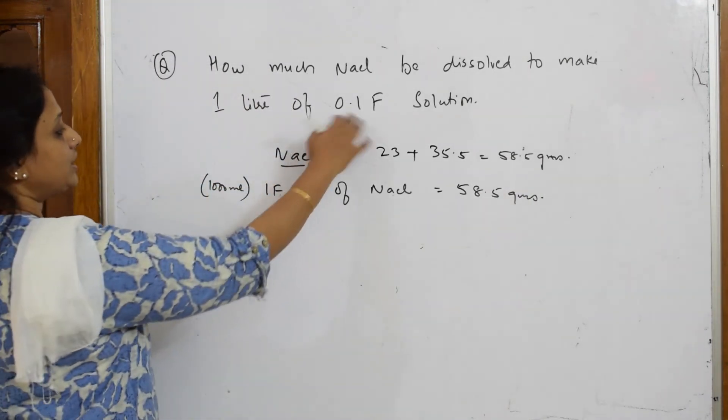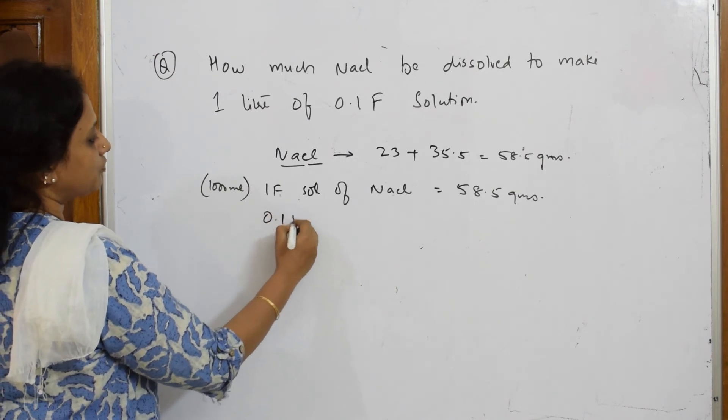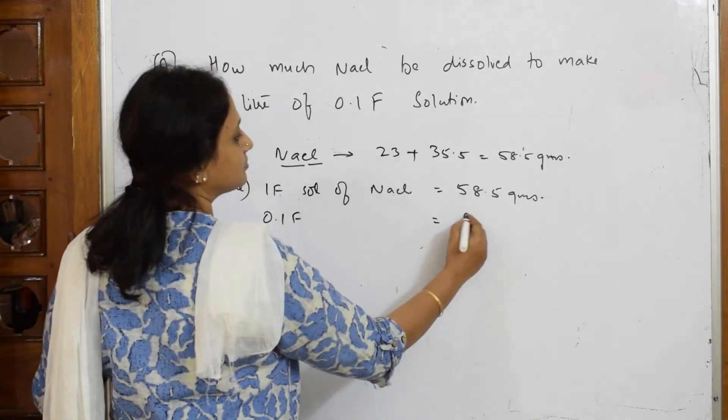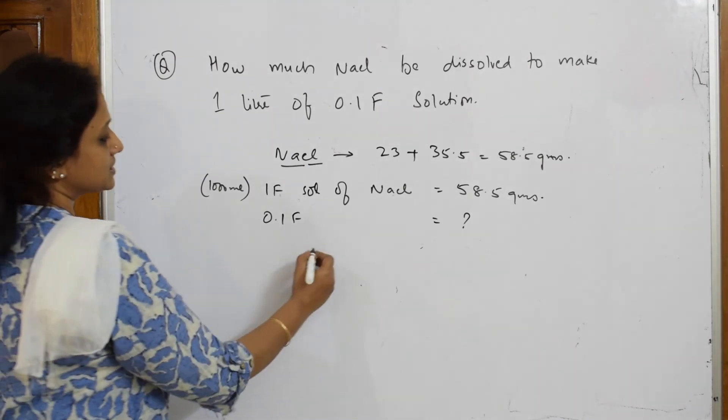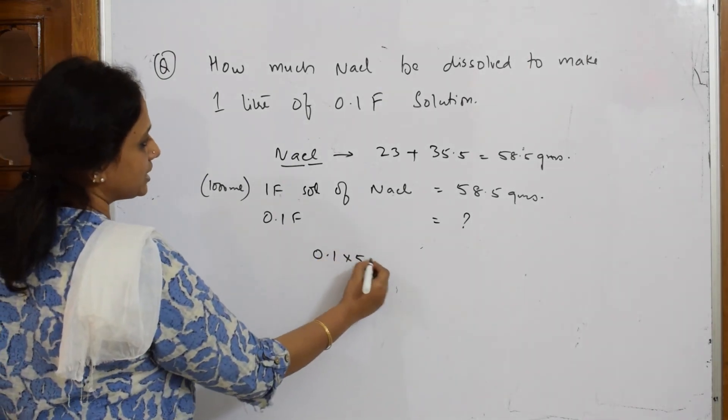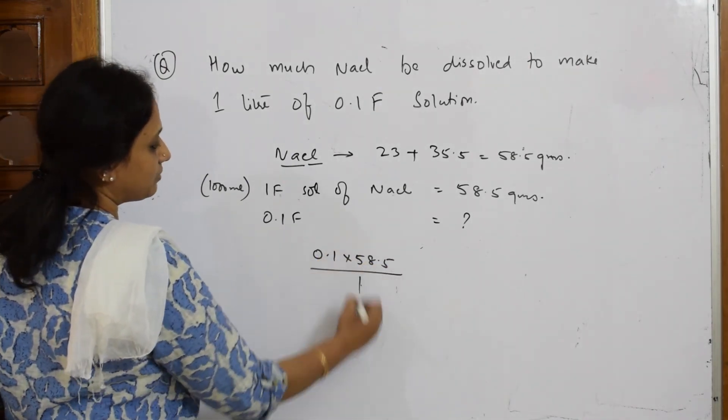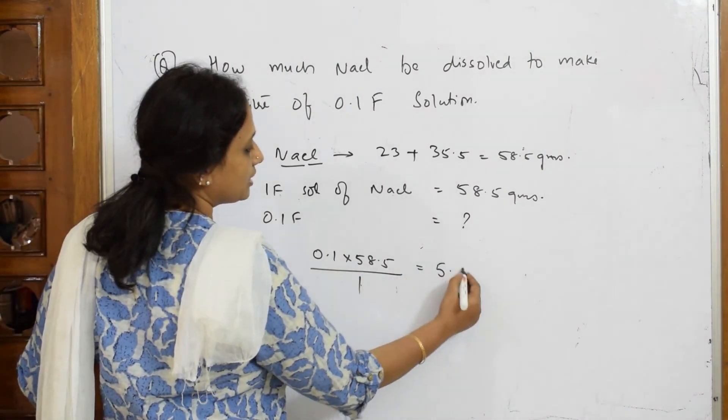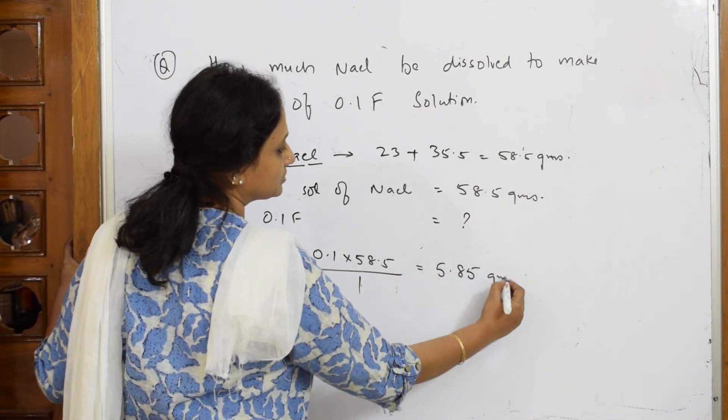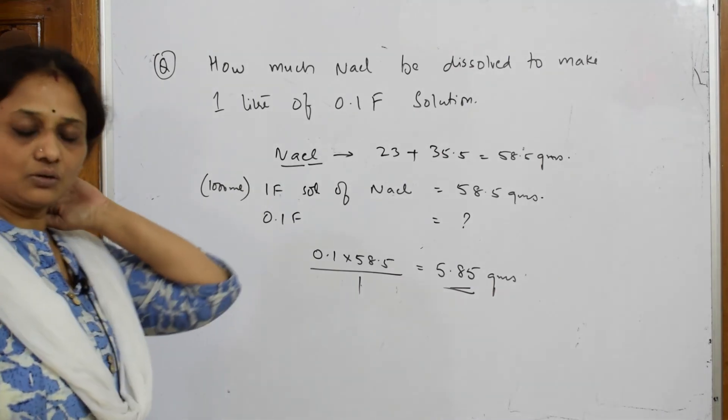Now what do they give me? 0.1 formal. 0.1 formal requires how many grams? Simple, isn't it? 0.1 into 58.5 divided by 1. This is nothing but 5.85 grams.